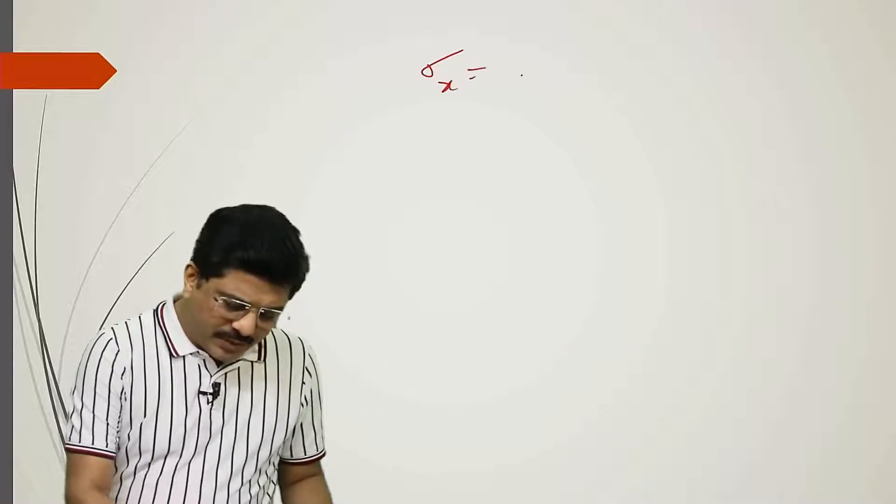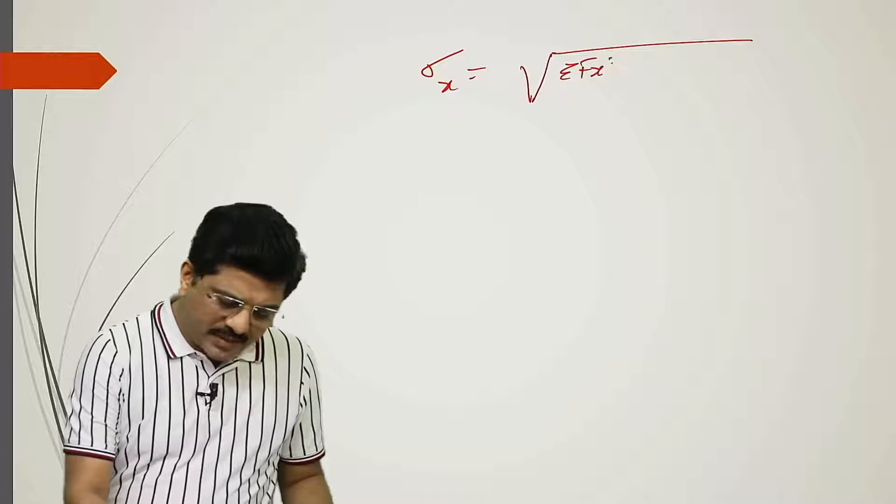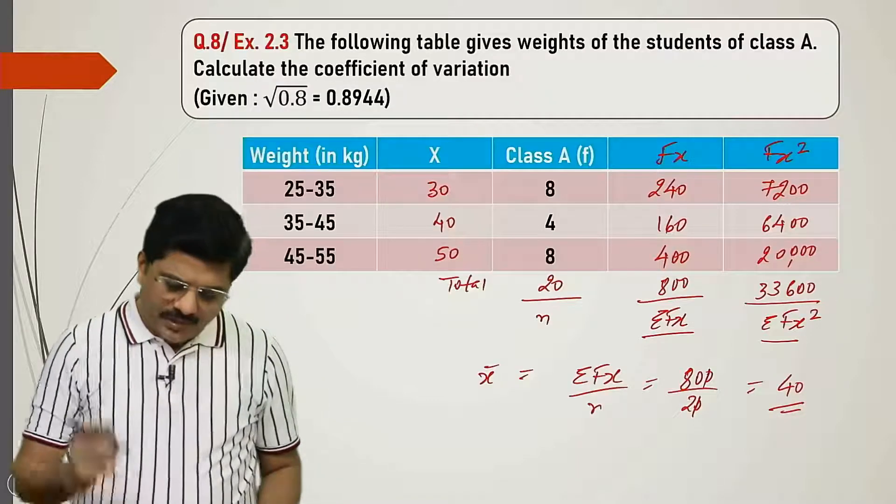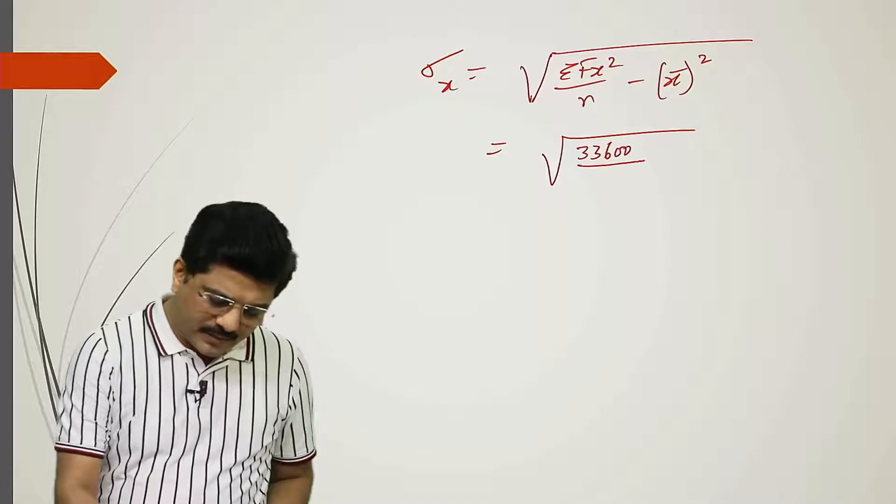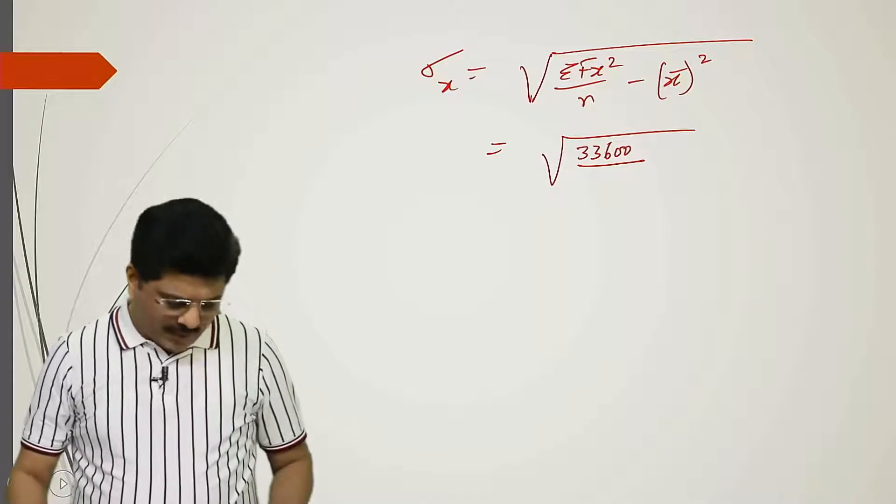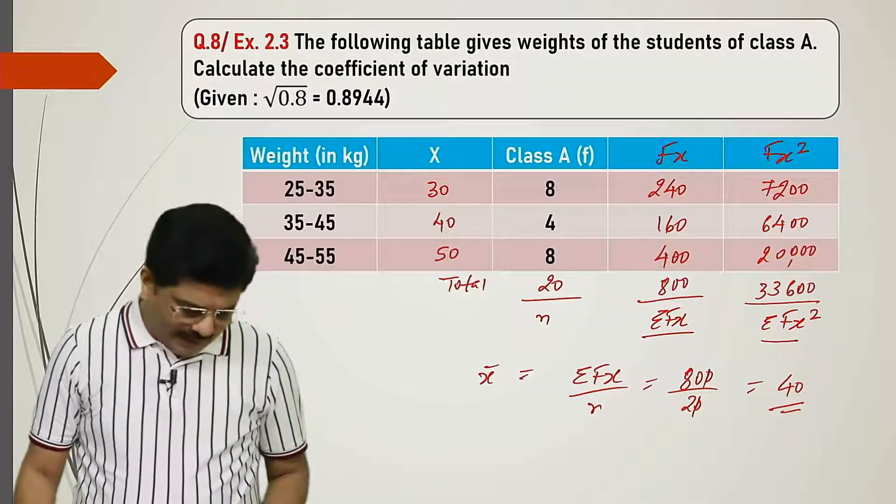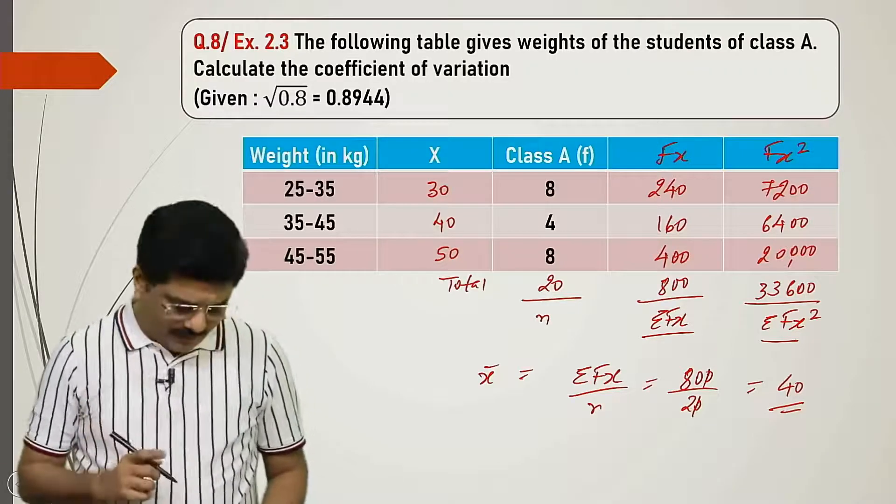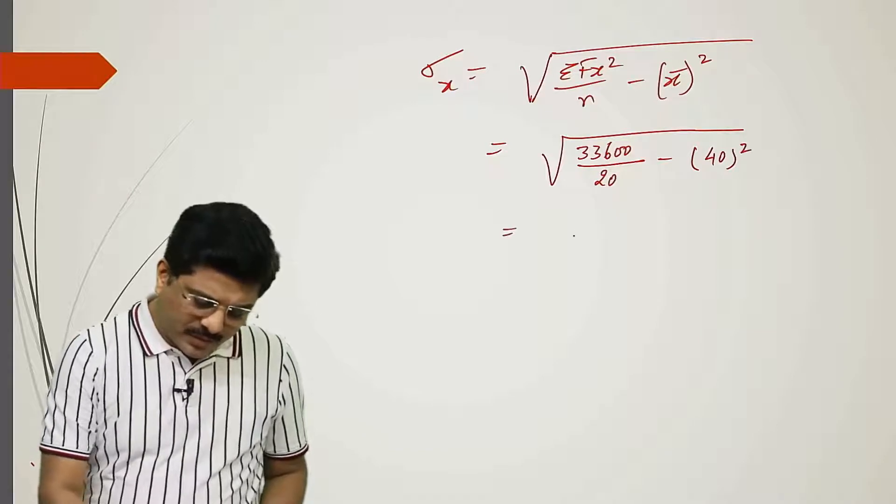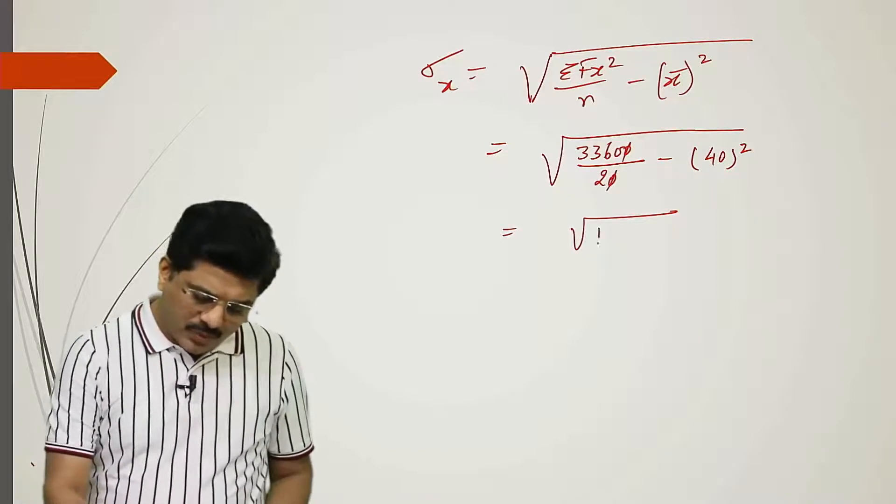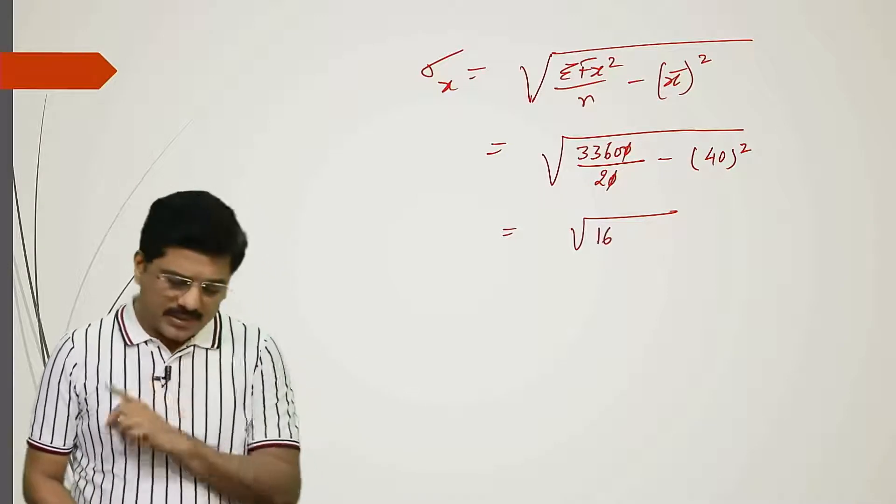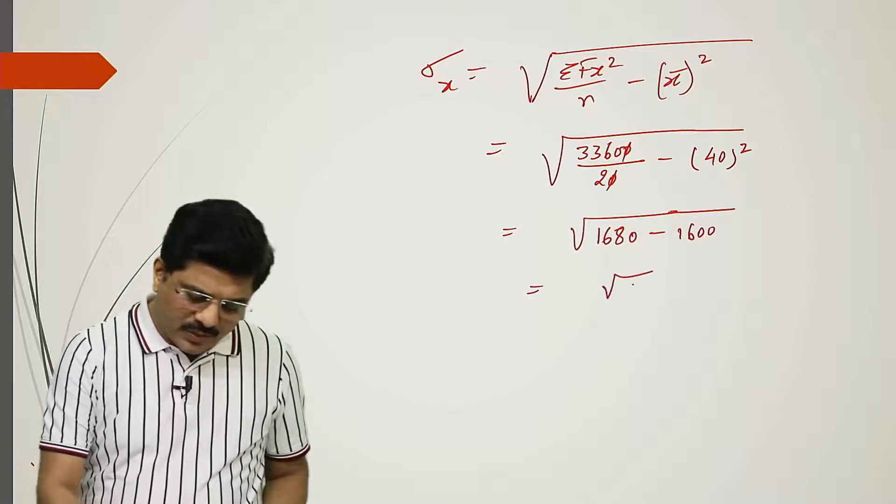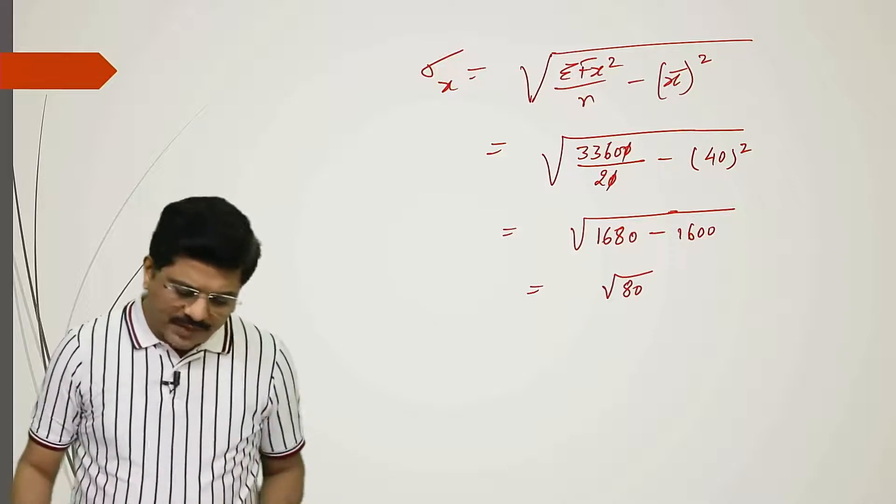Now we need to find standard deviation of x. Square root of summation fx square upon n minus x bar the whole square. Summation fx square is 33,600 upon n which is 20, minus x bar which we just found is 40, so 40 squared. 33,600 divided by 20: 2 ones are 2, 2 sixes are 12, 2 eights are 16, minus 1600. This gives square root of 80.